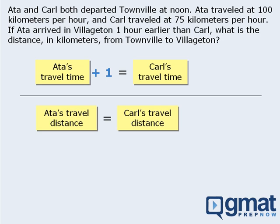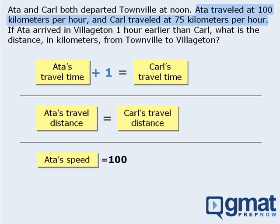What about the last theme? Can we write an equation based on speeds? We are told that Ada's speed was 100 km/h and Carl's speed was 75 km/h. So we could write two equations: Ada's speed equals 100 km/h and Carl's speed equals 75 km/h.